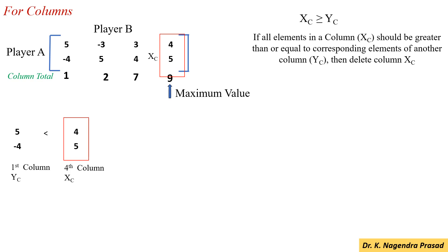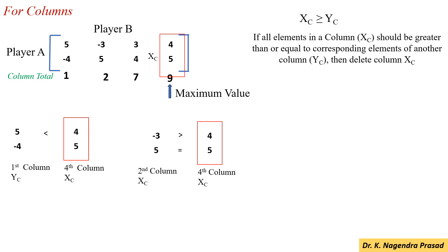Next, we have to compare the 4th column with the 2nd column. Here, the 4th column elements are 4 and 5. And the 2nd column elements are minus 3 and 5.